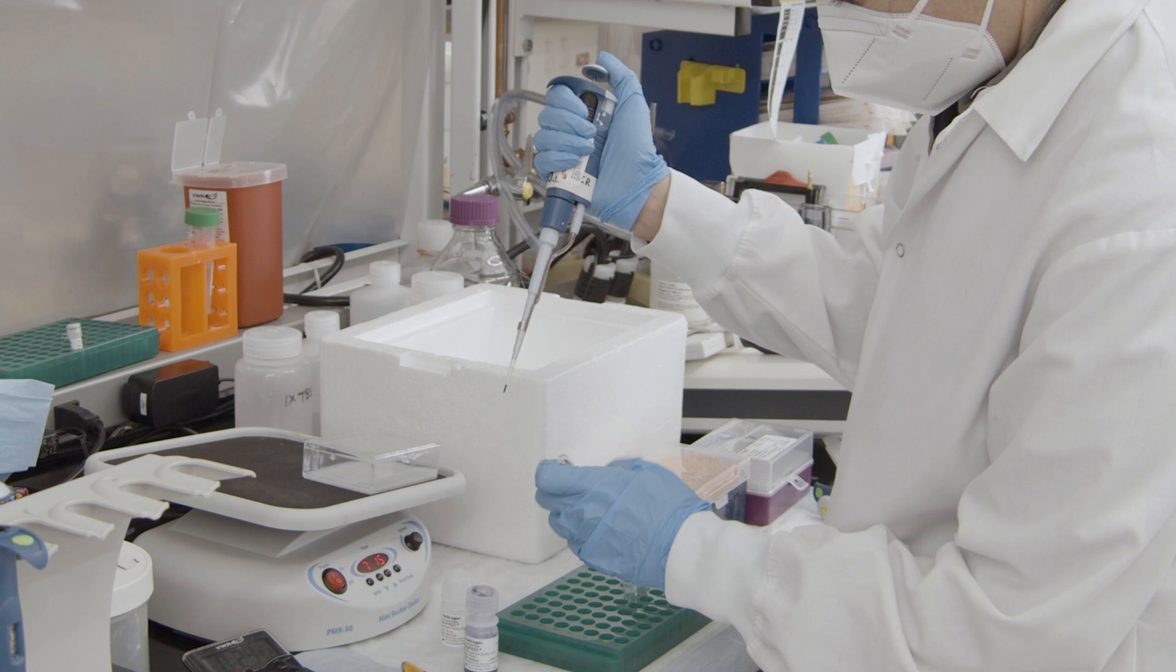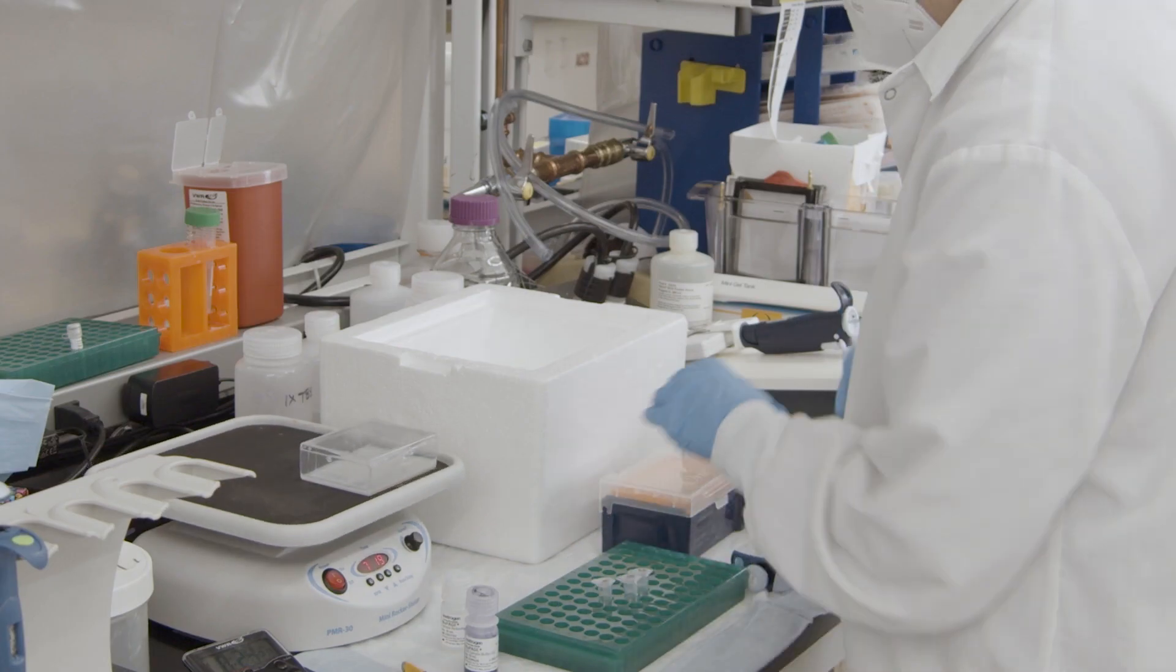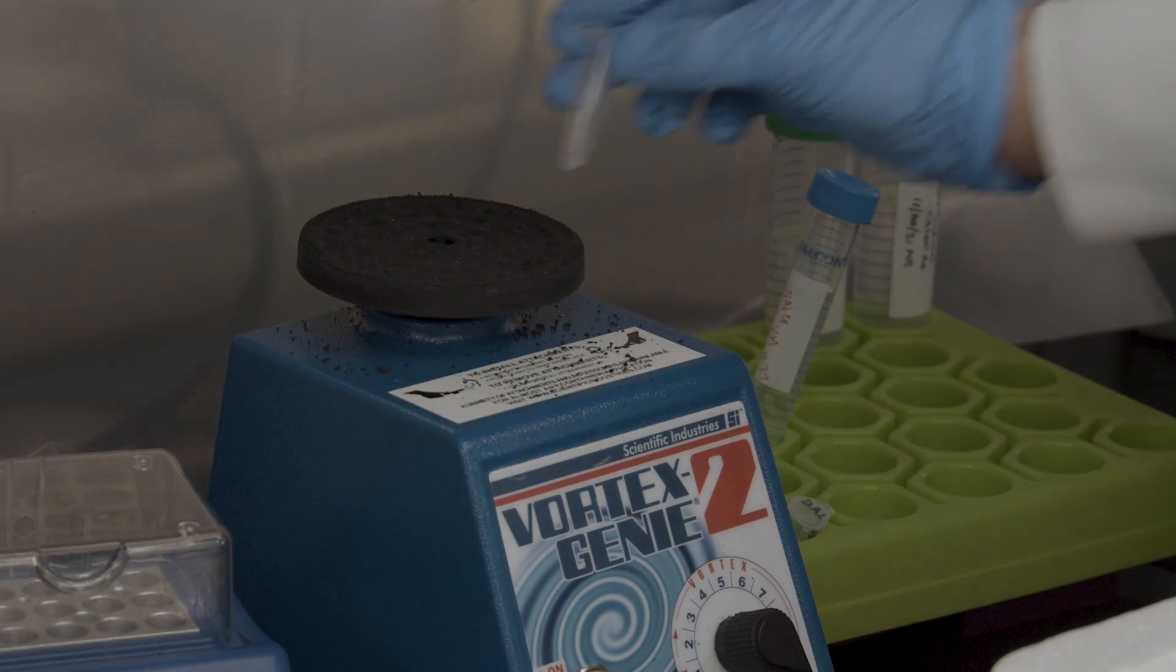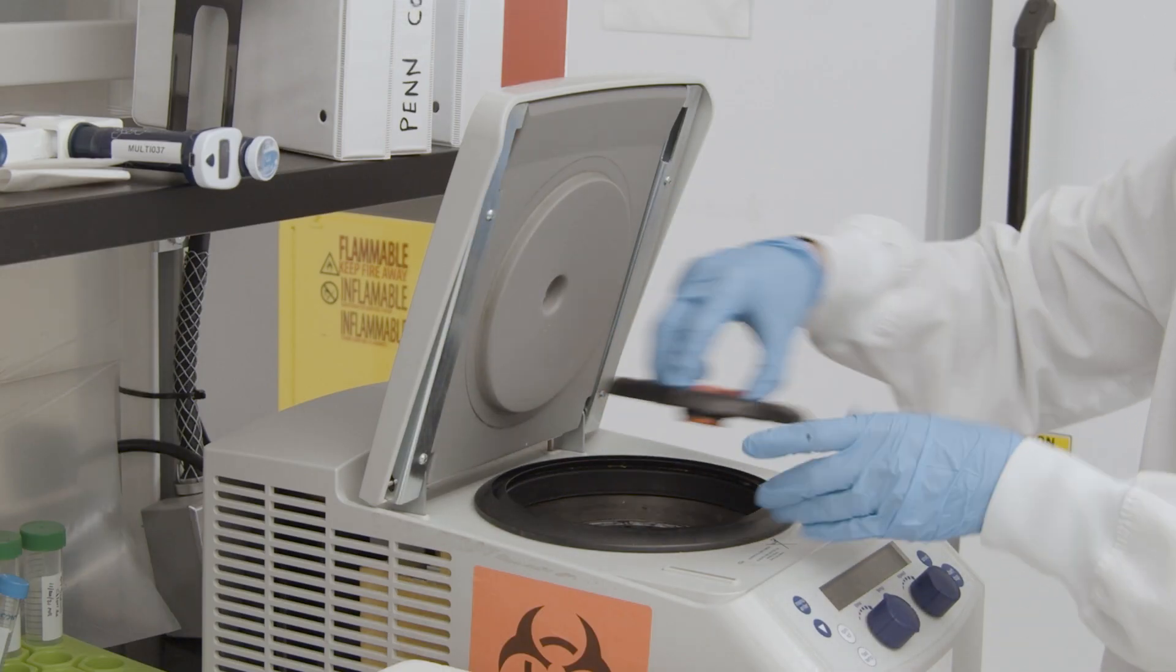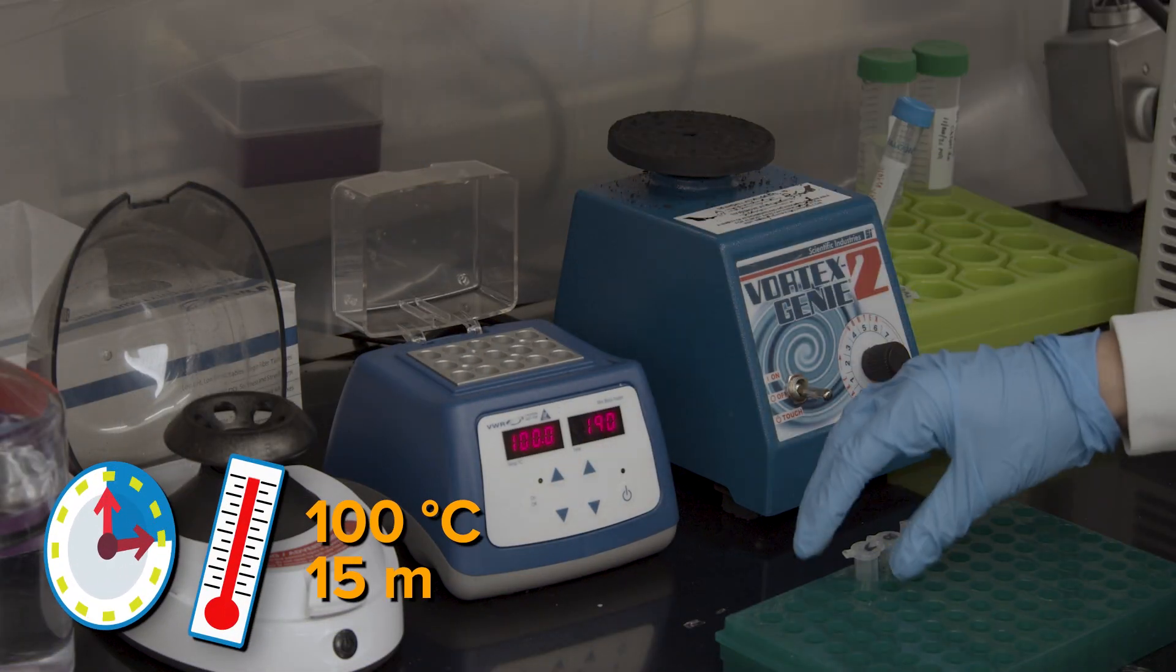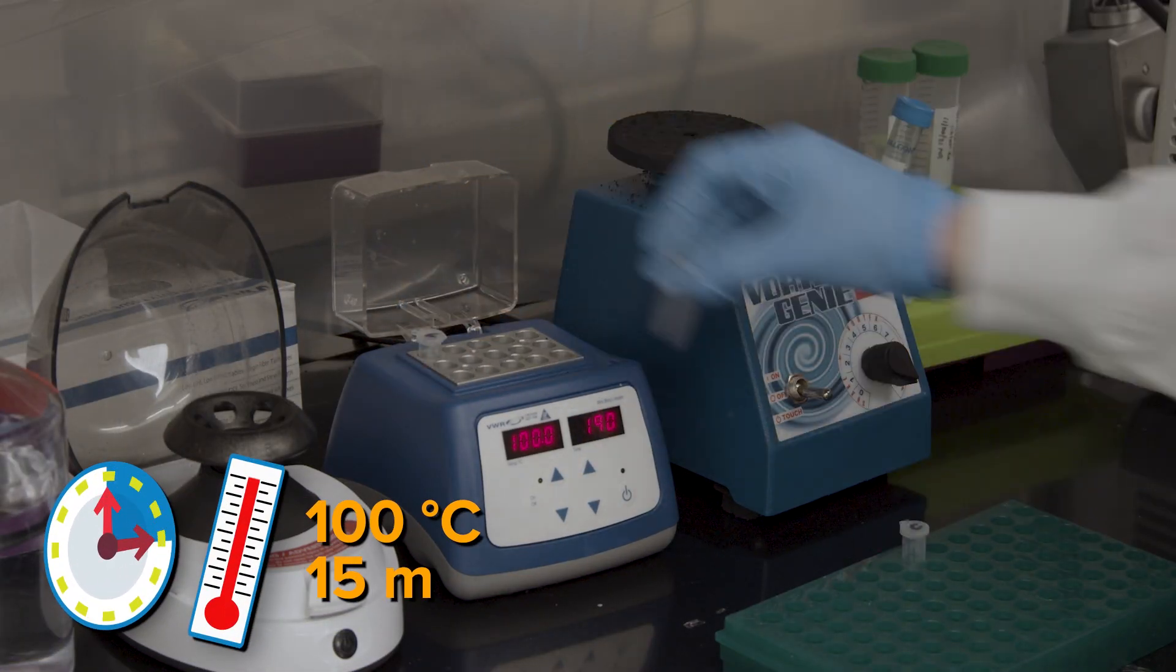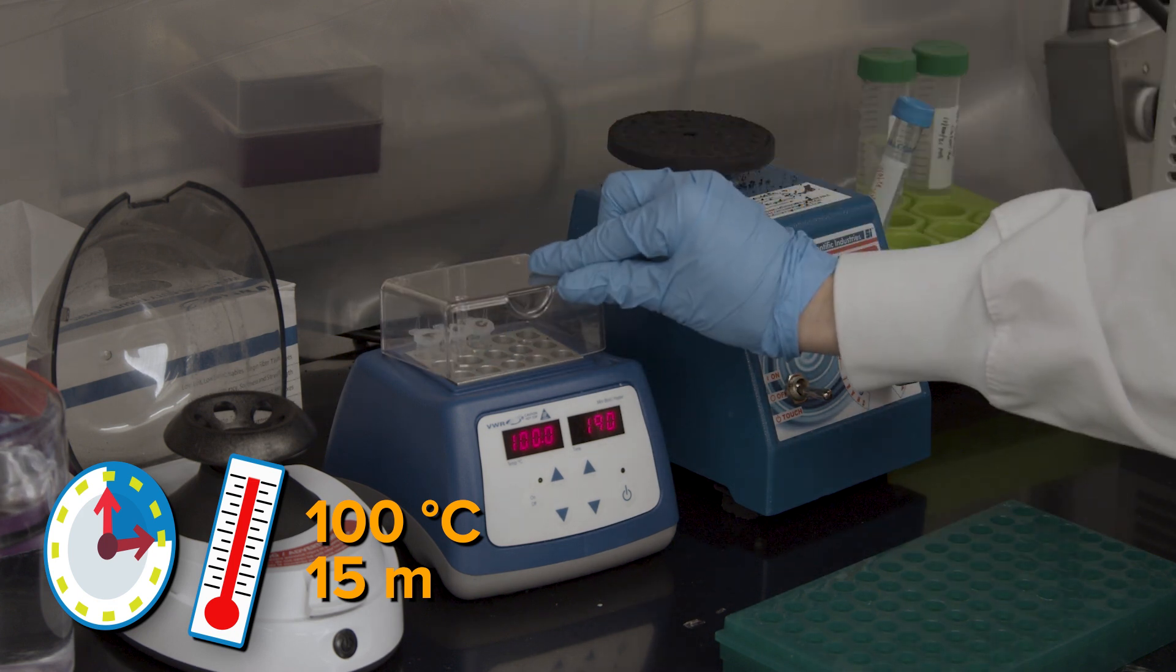In a microcentrifuge tube, combine the required volume of sample with set amounts of loading dye and reducing agent. Some people add distilled water to bring all the samples up to the same volume. Mix the samples by vortexing and centrifuge briefly. Boil the samples at 100 degrees Celsius for 15 minutes. This will reduce and denature the proteins in the sample. 15 minutes? Why that's just enough time to prep our SDS page gel for loading!